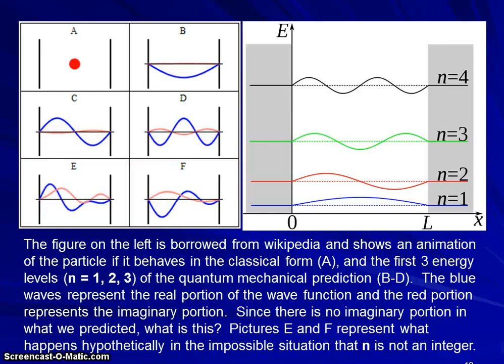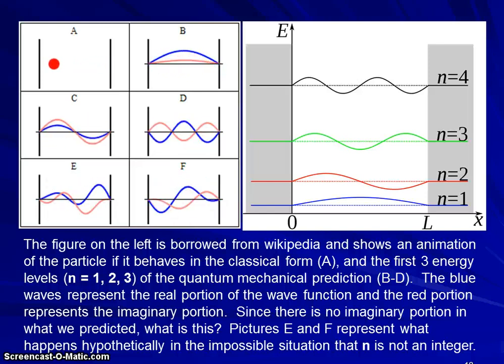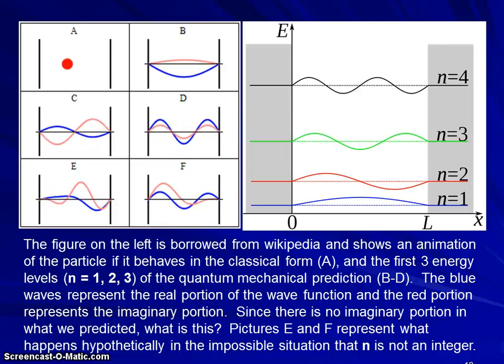E and F represent what happens hypothetically if we try to calculate it in such a way that n is not an integer. We find the particle's wave function constantly overlapping and interfering with itself. So B, C, and D are the first three energy levels; E and F are not energy levels. The blue wave represents the real part of the wave function, which is the only part we solved for. The red wave represents the imaginary portion. The imaginary portion would be the time dependent portion. We were only interested in the time-independent Schrödinger equation in the mathematics that we worked out.